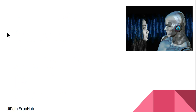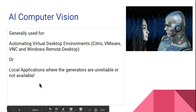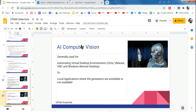You might ask where you'll actually use this. The real use case is when you open a virtual desktop environment on your laptop — for example, Citrix or VMware. These open within their own application, and within that you may have multiple applications. Think of it as a laptop within a laptop. In such virtual desktop environments, you would not be able to interact with any application normally — it acts as if it is an image. In such cases, you will have to use AI Computer Vision.